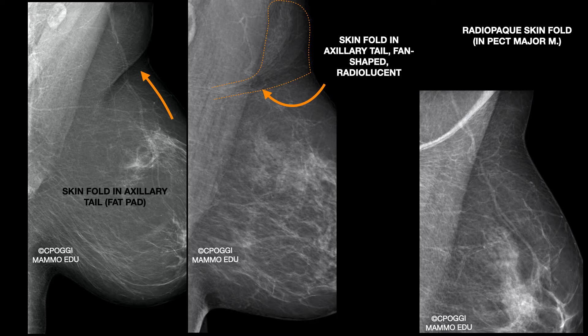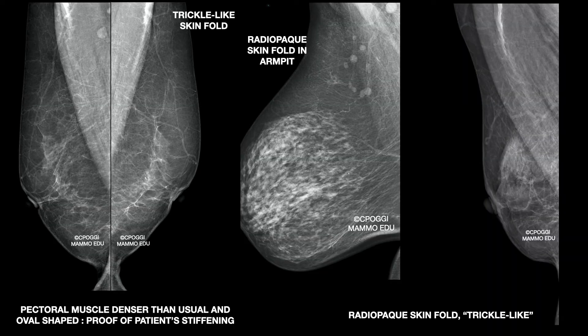Let's move on to another very common skin fold in the pectoralis major muscle. Very interesting here is what I call a trickle-like skin fold. You can find it only in patients with small breast and lean thorax, usually associated with stiffening of the muscle. You can also understand it by the shape of the muscle — oval, with a narrowing in the superior part.